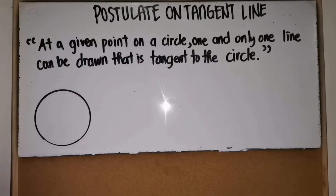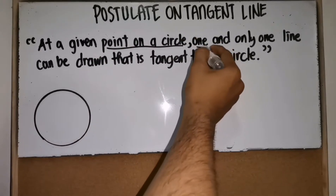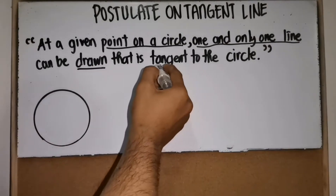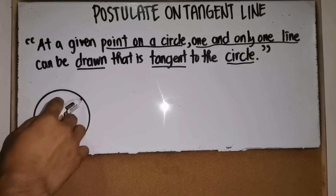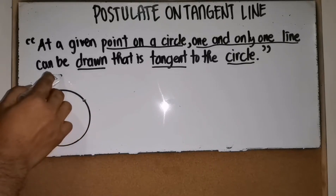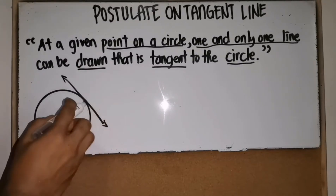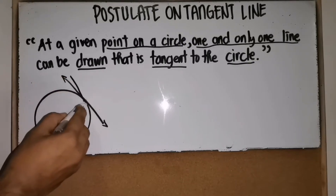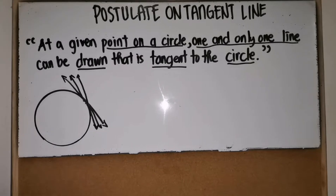Now let's proceed to the postulate on tangent lines. The postulate states: at a given point on a circle, one and only one line can be drawn that is tangent to the circle. Since a circle consists of many points, each point on the circle will have only one tangent line. For example, this point here will have one tangent line, another point will have another tangent line, and so on.